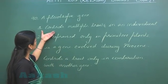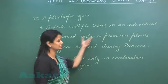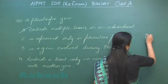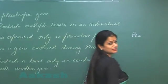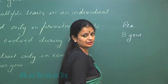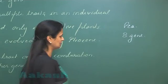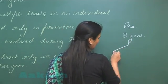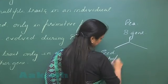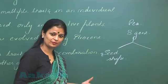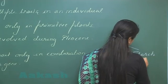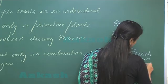The first option — controls multiple traits — is the right answer. As an example, in Pisum sativum there is a single gene called the B gene. This single gene controls seed shape, whether it is round or wrinkled, and it also controls starch grain size.